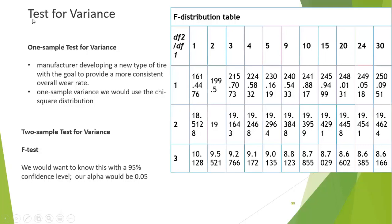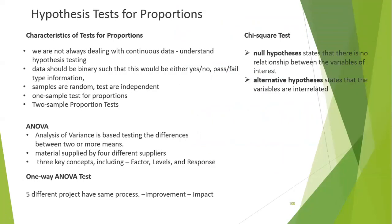Sometimes the variance will be different, and you need to use the F-distribution table. For example, if df1 and df2 are being compared, you take the value from the F-distribution table — similar to a log table used in school. For two-sample tests, the F-distribution table is also used. This will be covered in more detail at the next level.